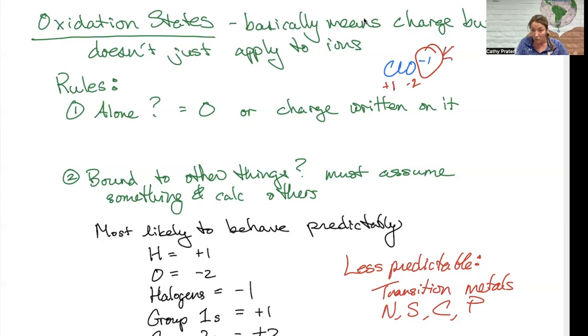So here are some rules for how we figure this out. If it's alone, the oxidation state is zero or it's the charge written on it. So for example, if it's Cl2 and there's no charge written on it, the oxidation state is zero. If it's Al and there's no charge written on it, the oxidation state is zero. If it's something like Cu plus two, it's alone but we wrote a charge on it.